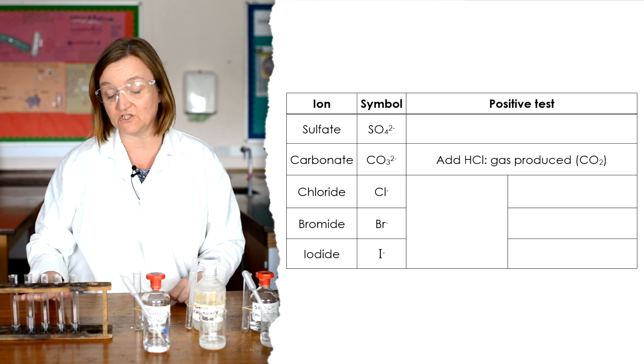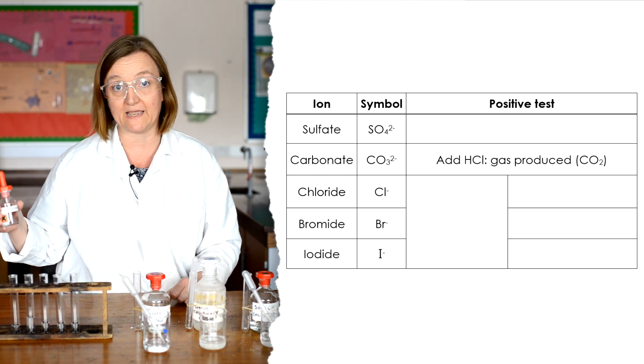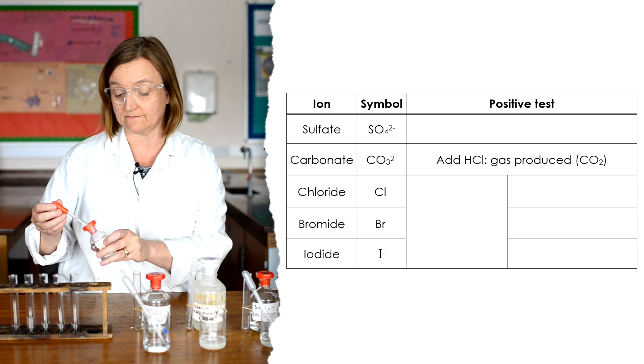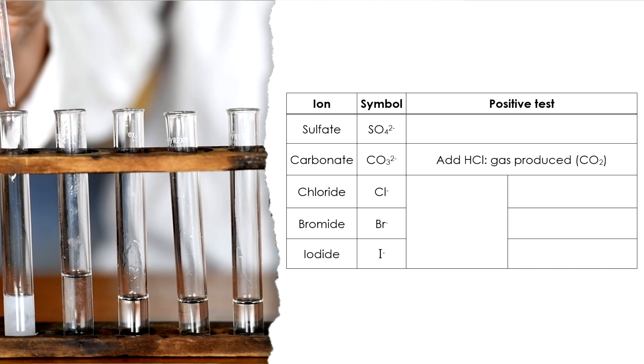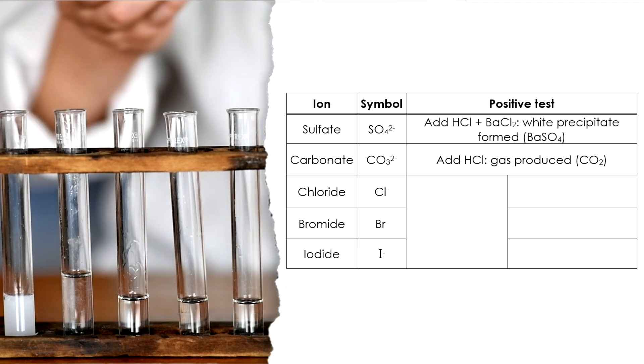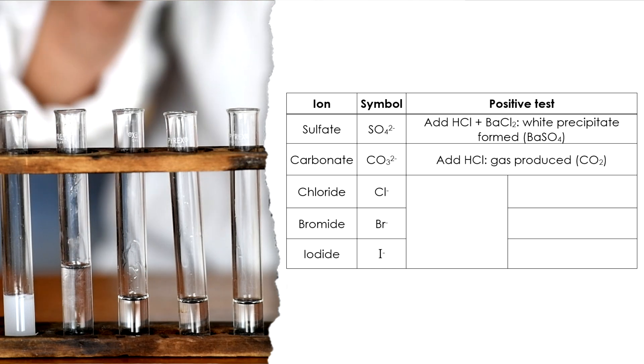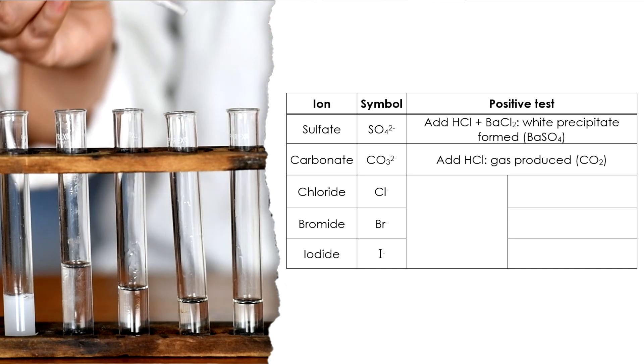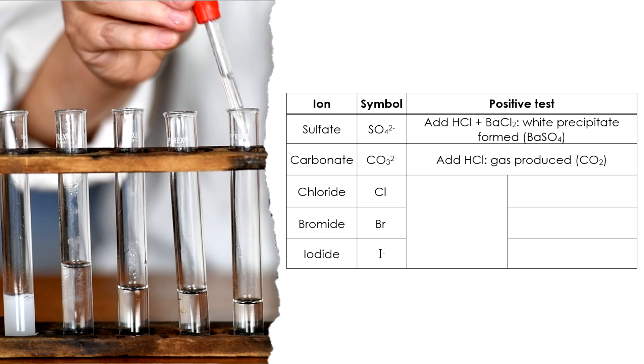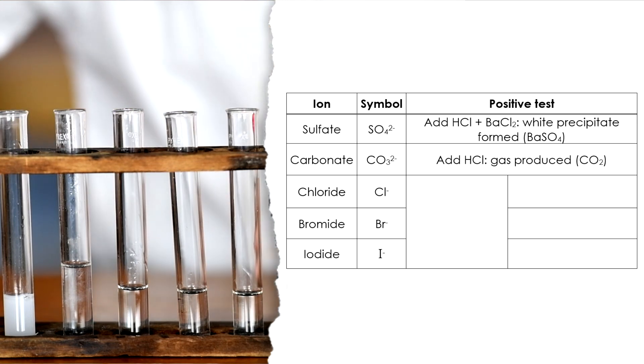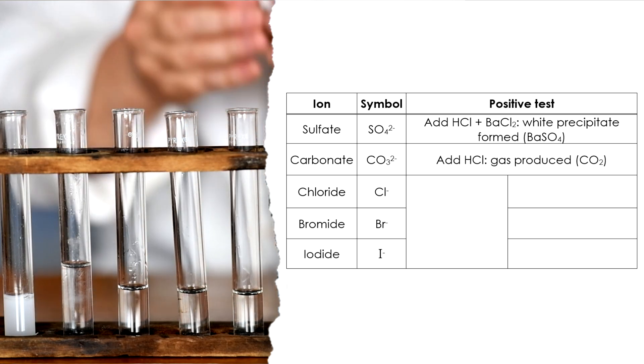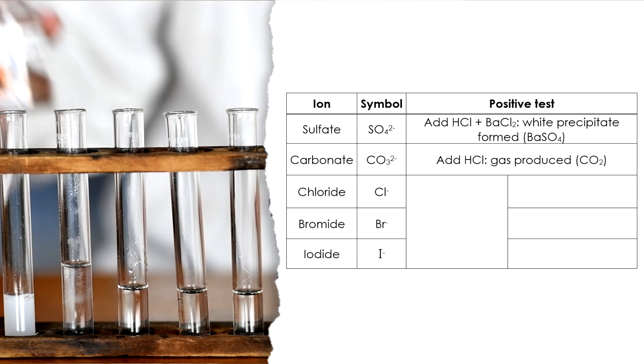Now we can do the next test straight away. We don't have to change anything because I'm now going to test them all with barium chloride. I've already put the hydrochloric acid in, but now let's see what happens when I add barium chloride. So into sulfate, a white precipitate forms immediately of barium sulfate. Into the carbonate, no change. Into the chloride, no change. Into the bromide, no change. Into the iodide, no change. So where hydrochloric acid on its own can be used as a test for carbonate ions, we saw the fizzing, following hydrochloric acid with barium chloride can be used as a test for sulfate ions, and we get the white, insoluble precipitate of barium sulfate formed.